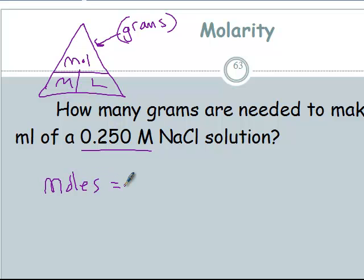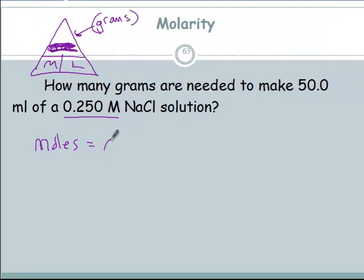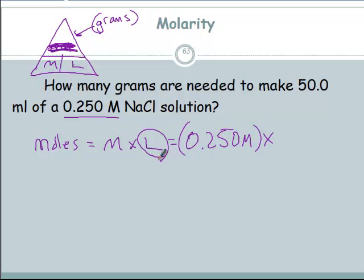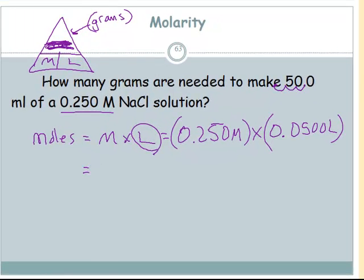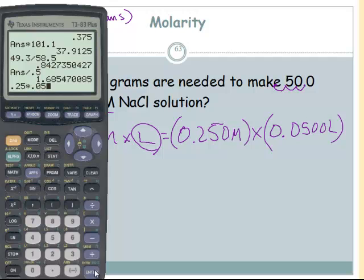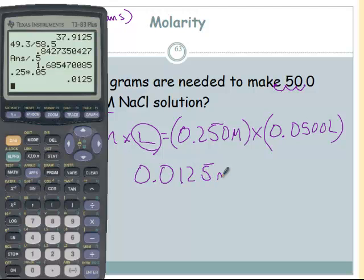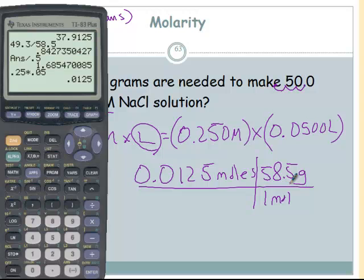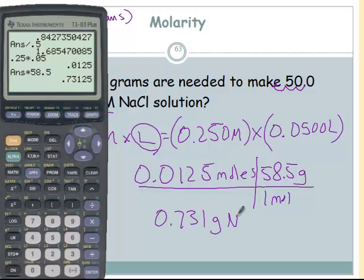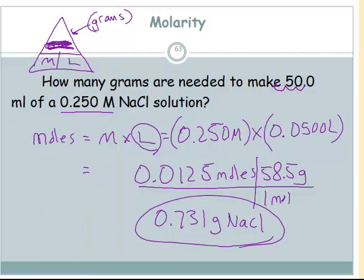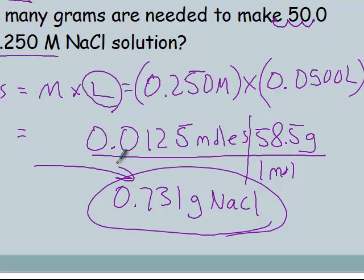Moles equals molarity times liters equals 0.250 molar times — converting 50 milliliters: 1, 2, 3 to the right gives 0.0500 liters. Multiply those two together: 0.25 times 0.05 equals 0.0125 moles of NaCl. Then one mole is 58.5 grams per mole — the molar mass of NaCl — so 0.0125 times 58.5 gives 0.731 grams of NaCl. We would measure out 0.731 grams on our balance.